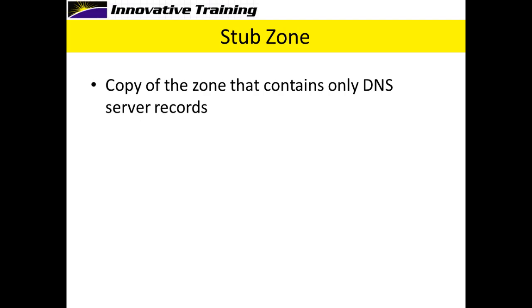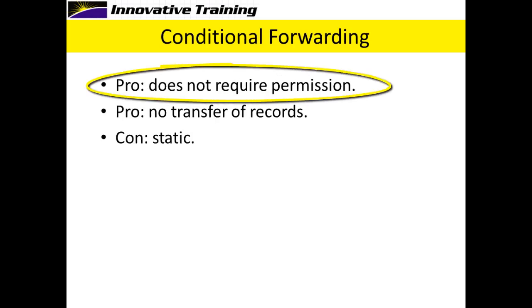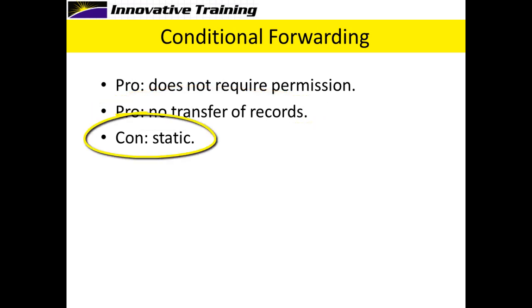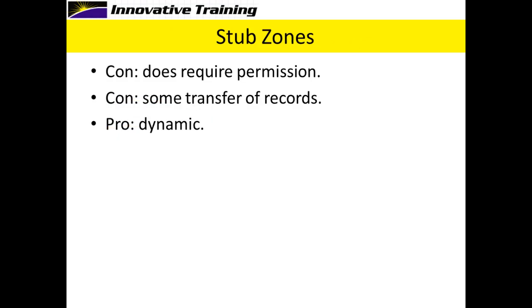With conditional forwarding, one of the pros is that it does not require permission. Since it doesn't require permission, we can use conditional forwarding for a company with whom we don't have a formal relationship. Another pro is that there's no transfer of records, so there's no traffic going back and forth between the two companies. The con is that it's static — if the DNS servers at the other domain change their IP address, you have to manually go into DNS and update the conditional forwarding.